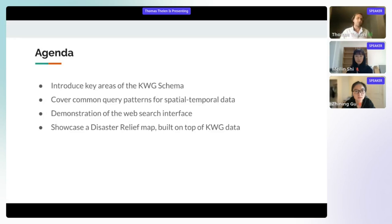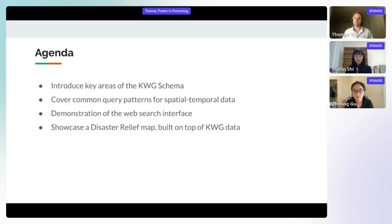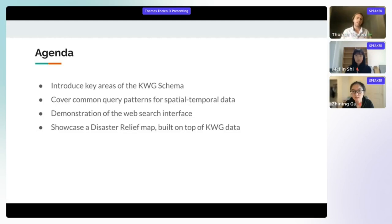Once that's done, Janine is going to give a demonstration of our web search interface. This is a nice abstraction over more detailed SPARQL queries where you don't need to understand the schema as much — it's a good way to browse the data. And last, Mei-Lin is going to showcase a disaster relief map, a Python application built on top of NowhereGraph, using data and concepts covered in the previous topics.